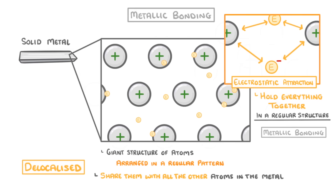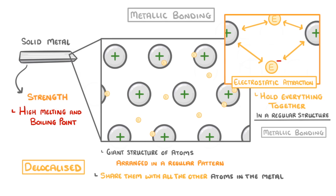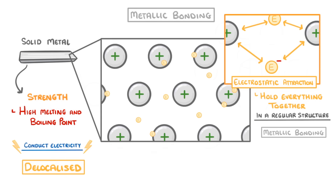This gives the overall metal strength, and means that most metallic structures have high melting and boiling points, so are solid at room temperature. They are also good conductors of electricity and heat, because the delocalised electrons can carry electrical current and thermal energy throughout the structure.